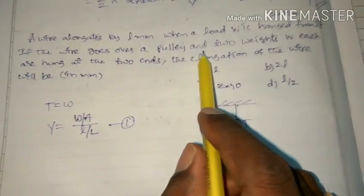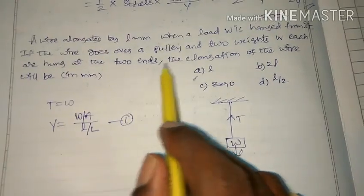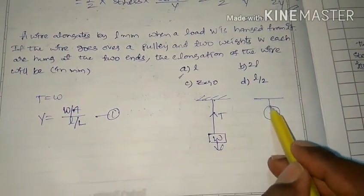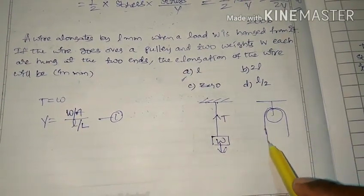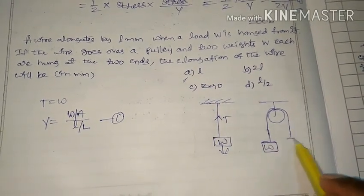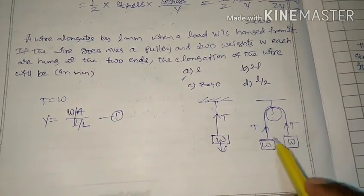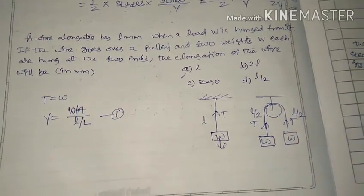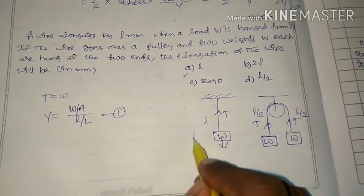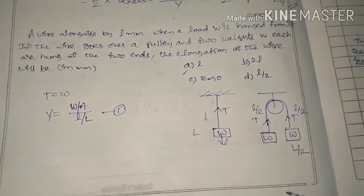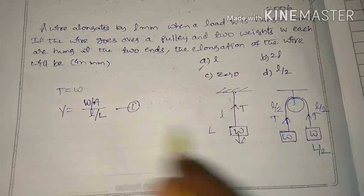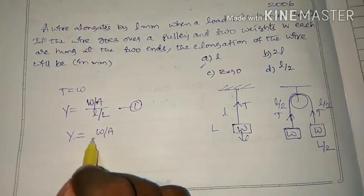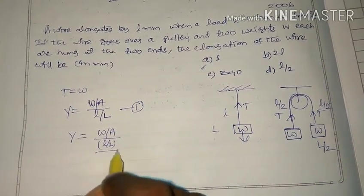In case 2, the wire goes over a pulley with weight W at each end. Each half of the wire has length L/2 as original length. At equilibrium the tension is still T = W. So Y = (W/A) / (Δl' / (L/2)) for each segment.